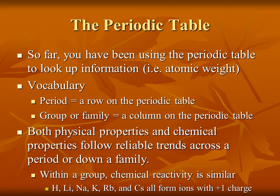What we're going to get at in this presentation is that both the physical properties and the chemical properties follow some very reliable trends across a period and down a family. A simple example is that within a group, chemical reactivity is similar. So if you look at the first group elements — hydrogen, lithium, sodium, potassium, rubidium, and cesium — all of these elements form ions with a plus one charge.